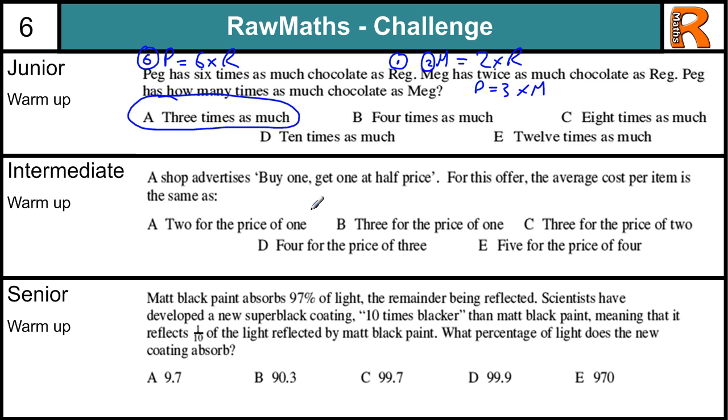Intermediate warm-up. So the shop advertises buy one, get one half price. So that's 100% is the buy one, and then one at half price is 50%, so we're paying 150% for two items. Let's have to see which one of these this is going to match to. Two for the price of one, three for the price of one, three for the price of two and so on. Well they're all in whole numbers, so let's just make this into a whole number. So that's one and a half times is two items,